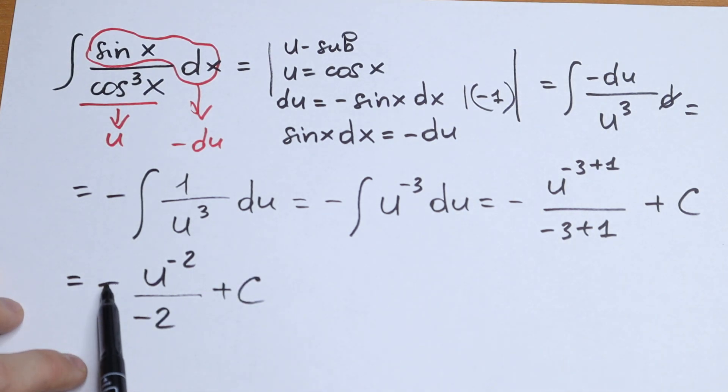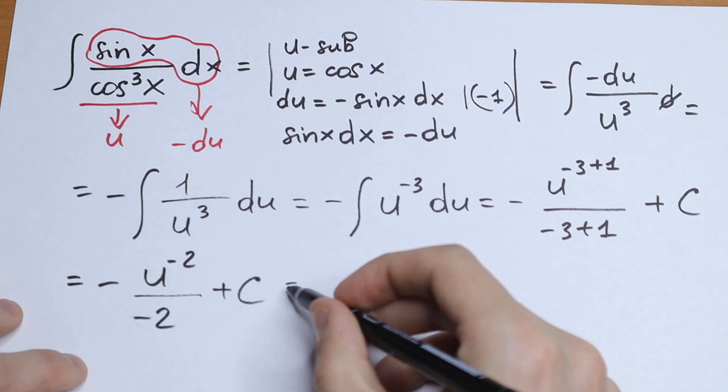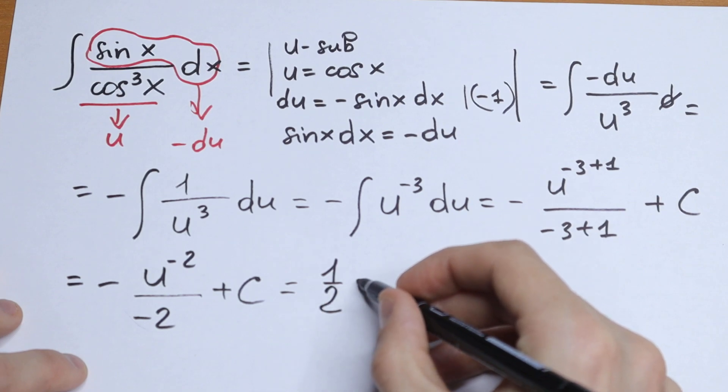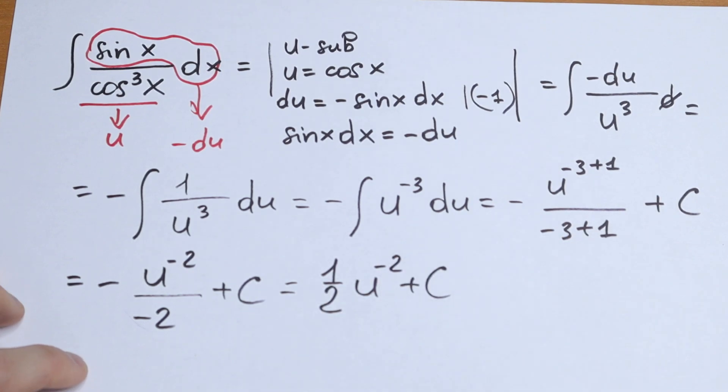This minus and this minus will be plus. So this is plus. And we will have the final result. We will have one half u to the power minus 2 plus c.